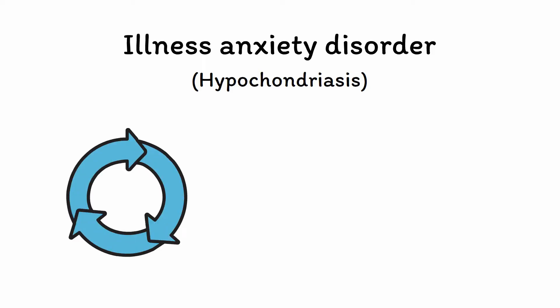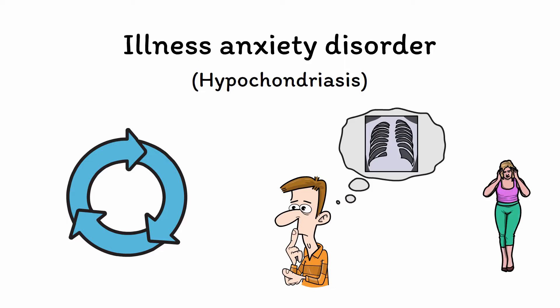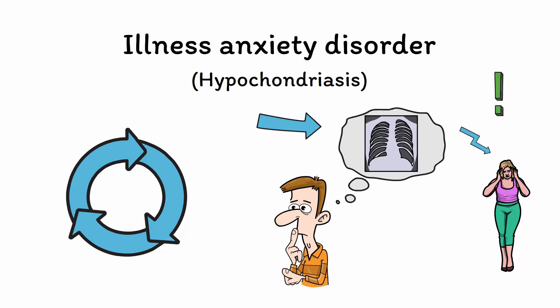So if you haven't watched the video on OCD yet, make sure to do that first — the link is in the description below. At its core, illness anxiety disorder involves an obsessional preoccupation that one has a medical disease, often something of a very serious nature like cancer. Unlike in somatic symptom disorder, where the patient's distress is about the symptoms themselves, in illness anxiety disorder the patient's distress is instead about the belief that they have a disease, with symptoms generally being perceived as merely the manifestations of this disease, such as thinking that a headache must be a symptom of brain cancer. It's a small nuance, but it's an important one for truly understanding both of these conditions.